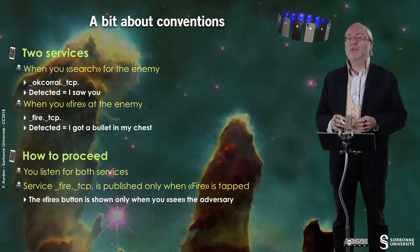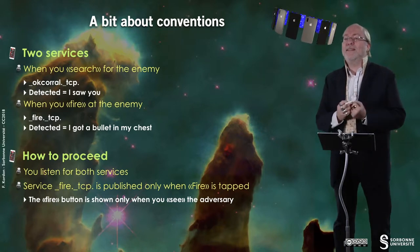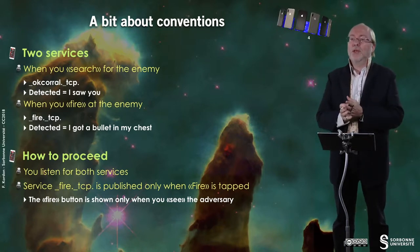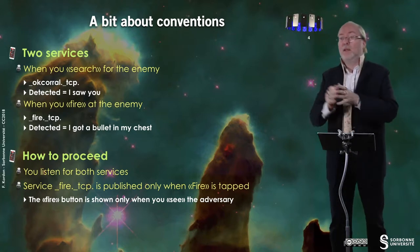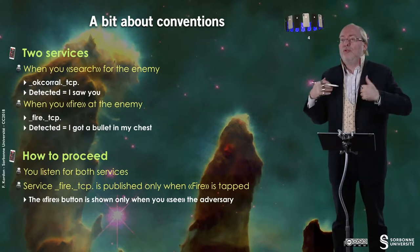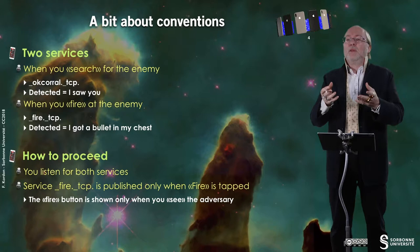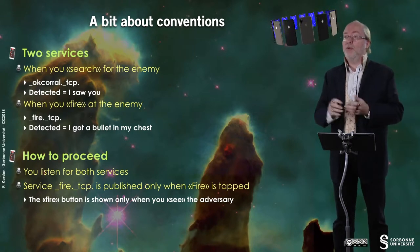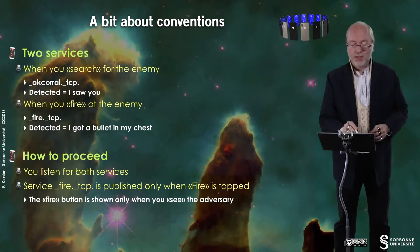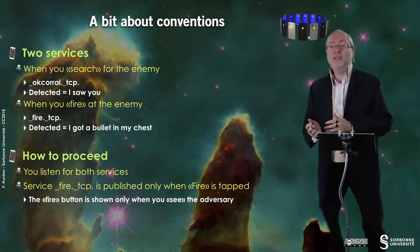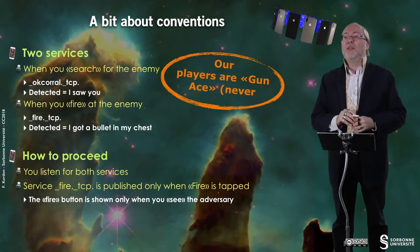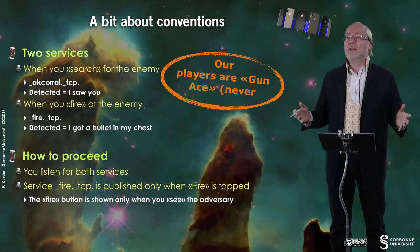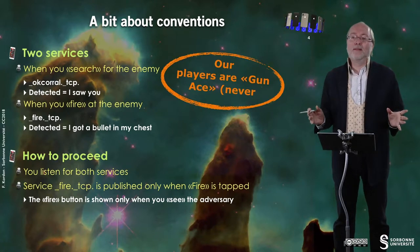I have two services. When you search for the enemy, it's OKCORAL, and when it's detected, it means I saw you. You have to take care about who is watching who, because you cannot watch yourself. Then it generates a button where you can tap and fire. It generates another service, and once it's detected, it means I got the bullet. We consider that our players are gun aces, so they never miss their target.